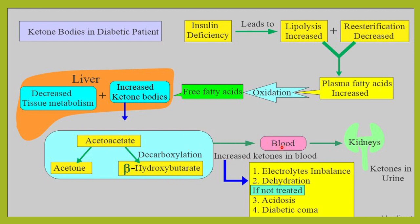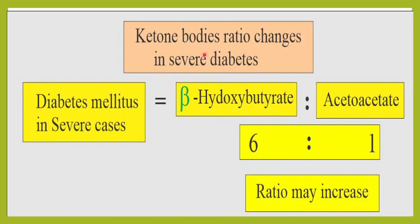When ketone bodies enter the blood and the patient has diabetic ketoacidosis, they may experience dehydration, electrolyte imbalance, coma, and acidosis — all caused by increased ketones in the blood. The kidney tries to remove them through the urine. In severe diabetes, the ratio of beta-hydroxybutyrate to acetoacetate becomes approximately 6:1.